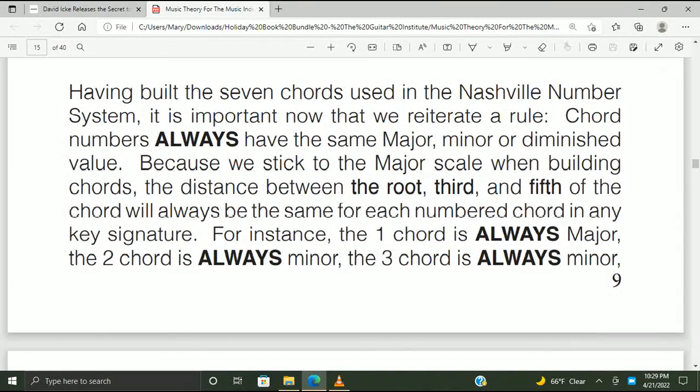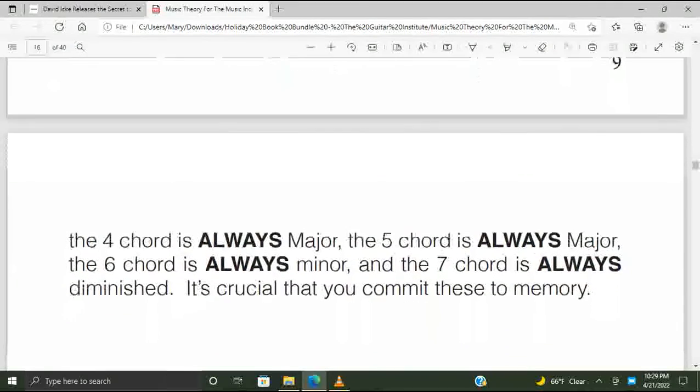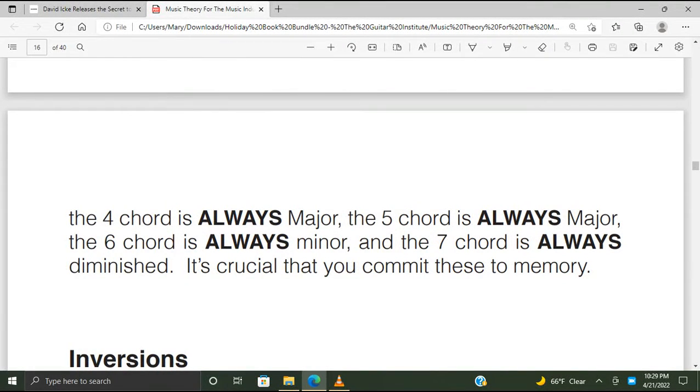A rule I gave: chord numbers always have the same major, minor, or diminished value. Because we stick to the major scale when building chords, the distance between the root, third, and fifth of the chord will always be the same for each numbered chord in any key signature. For instance, the one chord is always major, the two chord is always minor, and the three chord is always minor. The four chord is always major, the five chord is always major, the six chord is always minor, and the seven chord is always diminished. It's critical that you commit this to memory.